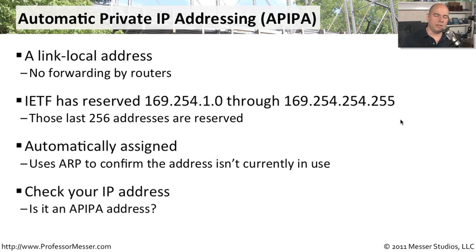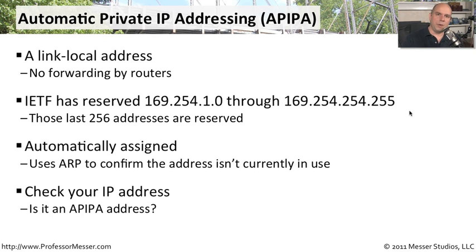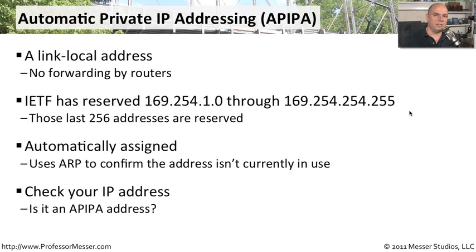One of the things we can do is look at the IP address on our computer. If it happens to be between 169.254.1.0 through 169.254.254.255, we can say: this machine did not receive an IP address via our DHCP server like we were expecting. It was instead assigned an APIPA address, and we need to understand why this computer was not able to talk properly to our DHCP server.